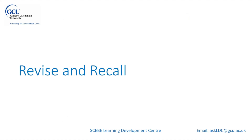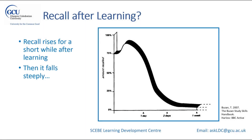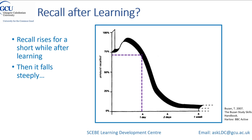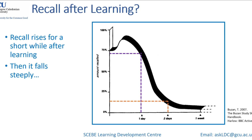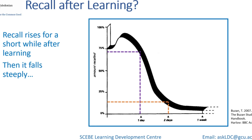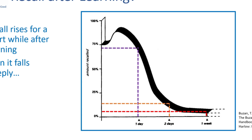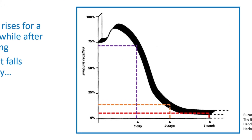Now, revise and recall. Again from Tony Buzan — this graph has amount recalled as a percentage on the vertical axis and one day, two days, one week along the bottom. Recall rises briefly after learning and then falls steeply. Learning something once without doing recall: after one day it drops from 75% to just below that, after two days down to about 15%, and after a week without any revision it drops to about 5%. If you only learn something once and don't review it, in a week's time most of it will have gone.